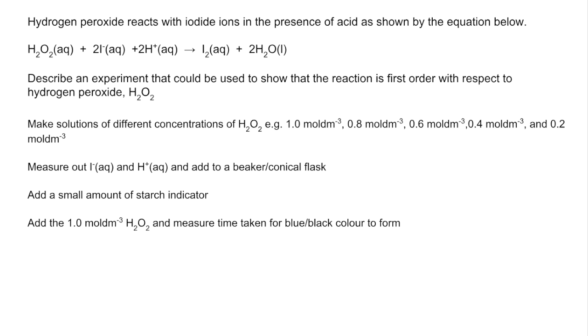Then we'd add the 1 mole per decimetre cubed hydrogen peroxide solution, that's the first of these concentrations, and we measure the time taken for that blue-black colour to form. Then we'd just repeat for the other solutions, remembering to say that we'd use the same volumes and concentrations of the other chemicals.